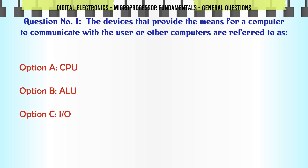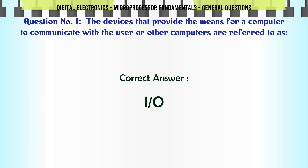The devices that provide the means for a computer to communicate with the user or other computers are referred to as: A. CPU, B. ALU, C. I/O, D. None of the above. The correct answer is I/O.